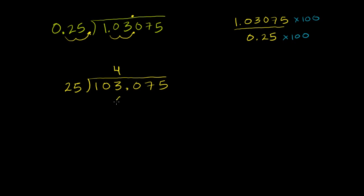4 times 5 is 20. 4 times 2 is 8, plus 2 is 100. We knew that. 4 times 4 quarters is $1.00. It's 100 cents. And now we subtract.